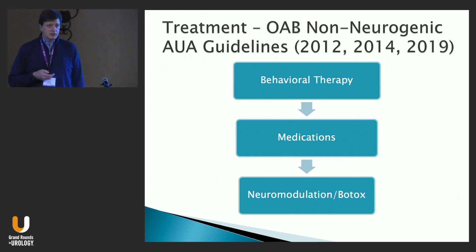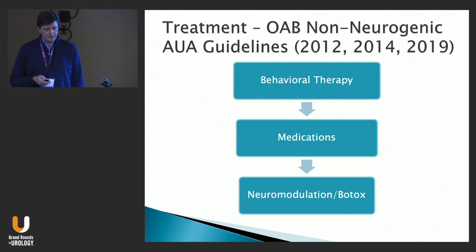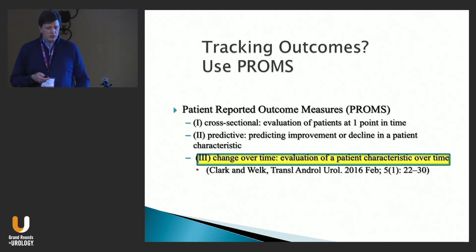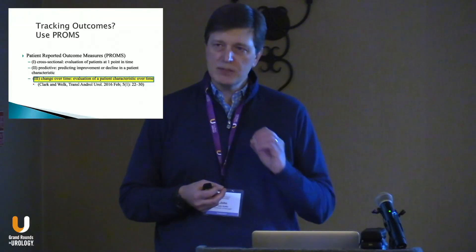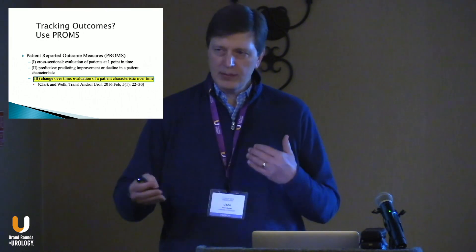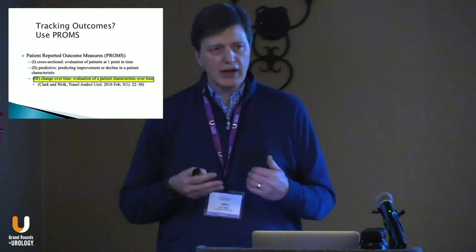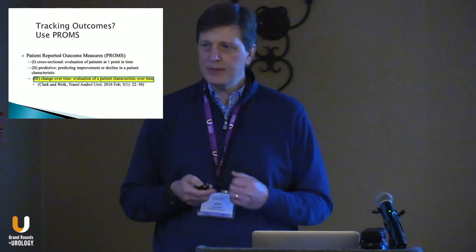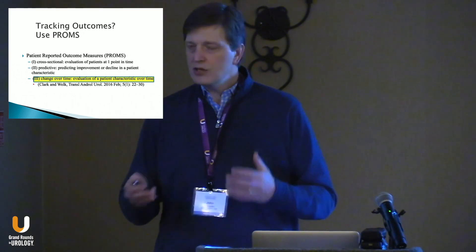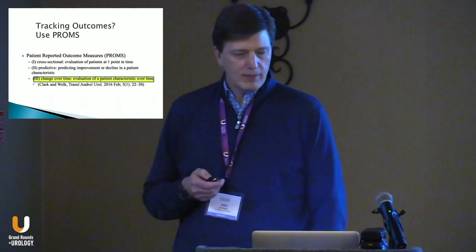For overactive bladder treatment, think of it as a ladder: start with behavioral therapy, move to medications, then to third-line therapy if ineffective — progressing sequentially. For tracking outcomes, focus on patient-reported outcome measures. It can be difficult to know which symptoms to target, so pick specific symptoms, define them with the patient, and use a questionnaire or consistent question each visit. OAB and IC cannot be viewed as yes-or-no answers — look at gradation of improvement and educate the patient on goals.